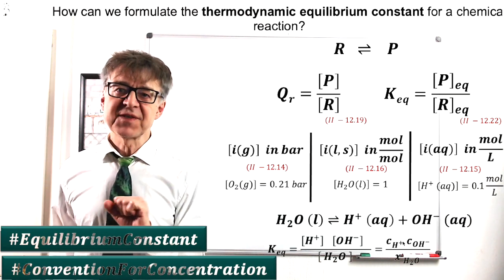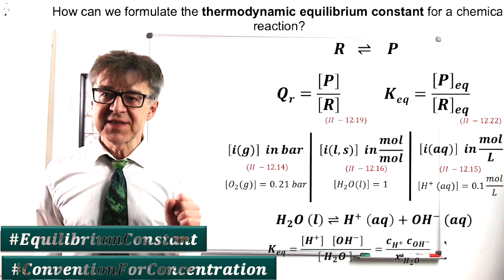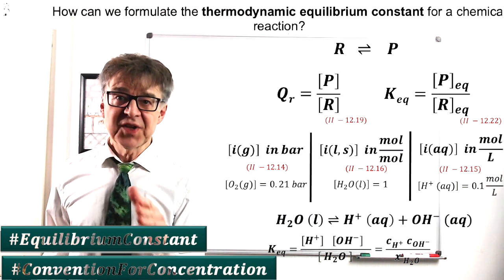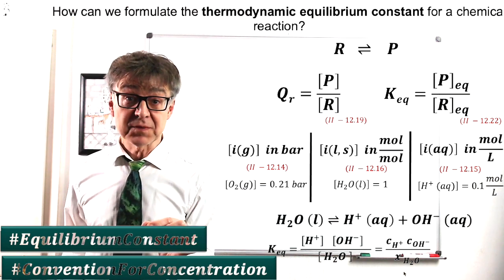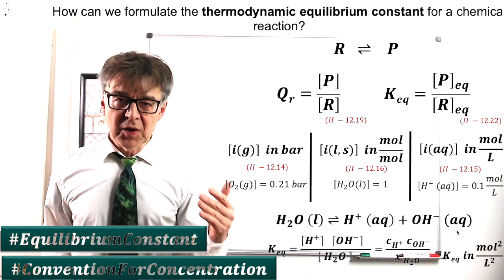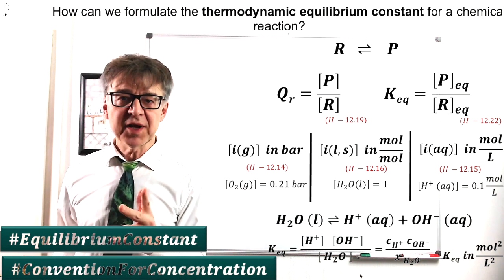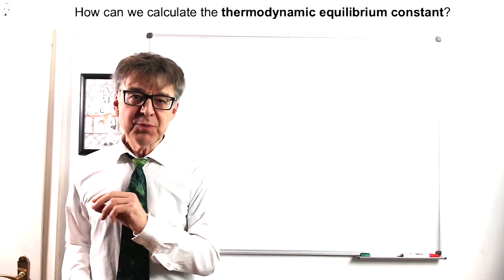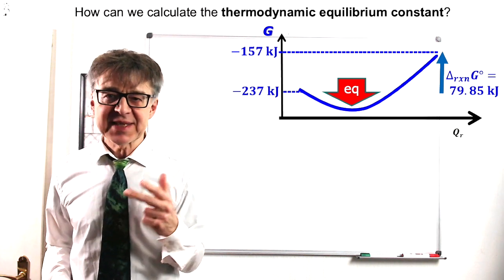This means that the thermodynamic equilibrium constant for autoprotolysis of water must be formulated as follows. There are two dissolved substances in the numerator of the law of mass action, molarity of H plus and molarity of OH minus in moles per liter. In the denominator, the concentration of liquid water must be quantified using the mole fraction. This defines the unit of the equilibrium constant, mol squared over liters squared. By the way, as we deal with almost pure water, its mole fraction will be 1 and we can omit the denominator.